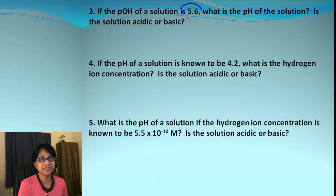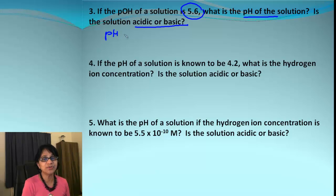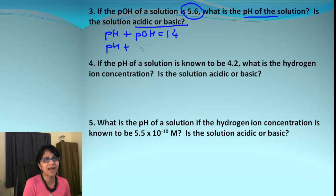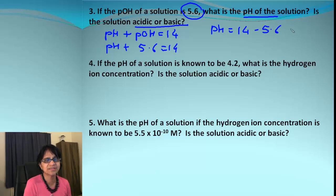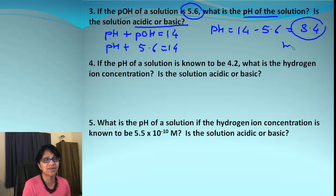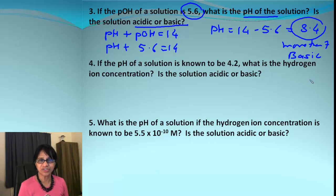Problem 3: pOH is given as 5.6 and we need to find pH and predict if it's acidic or basic. Using pH + pOH = 14: pH = 14 − 5.6 = 8.4. Since 8.4 is more than 7, this is a basic solution.